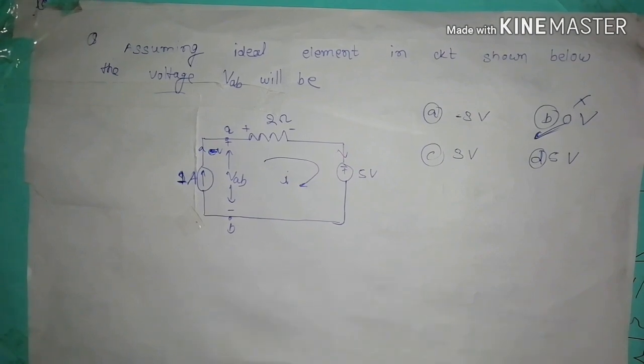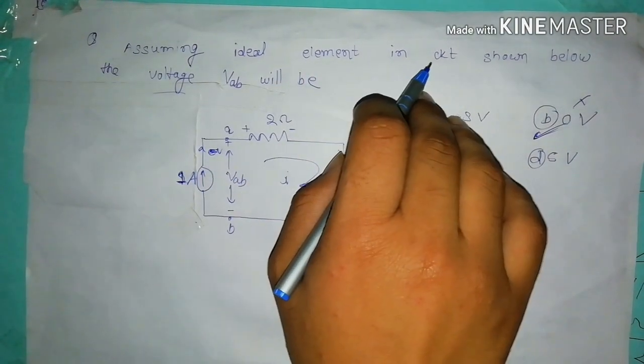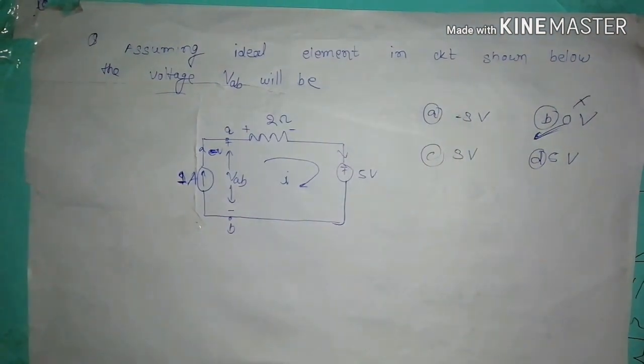Here is one question. The question is: assuming ideal elements in the circuit shown below, the voltage VAV will be.